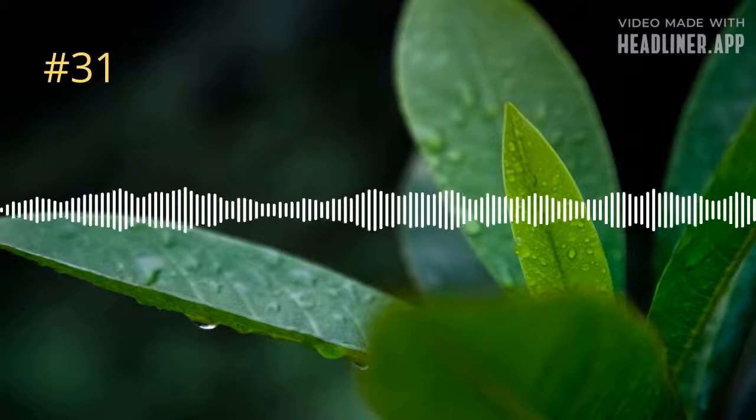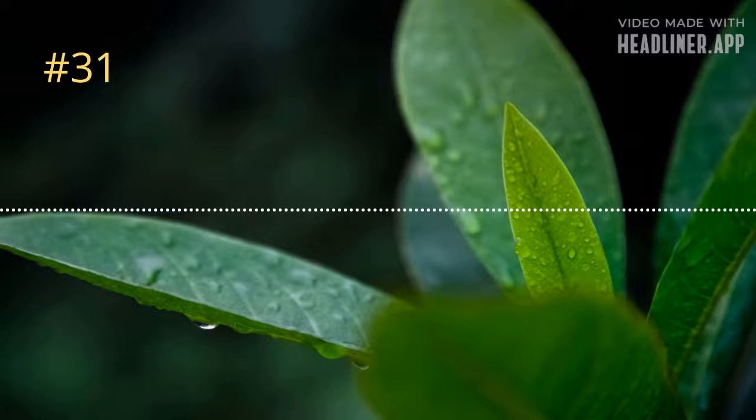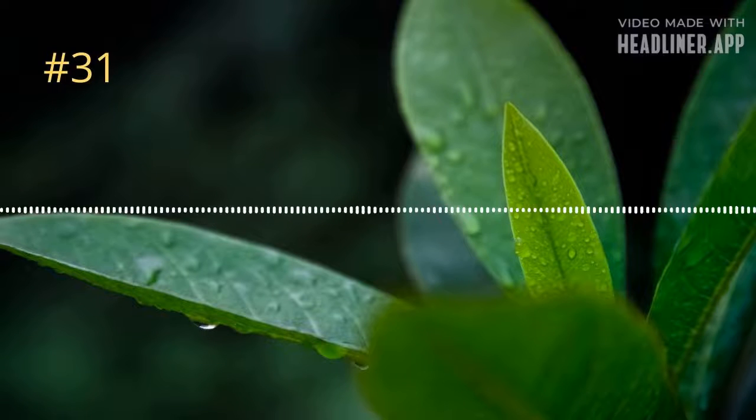The flagella of these choanocytes beat in order to create a water current through the sponge, which enables new water and new microorganisms to keep flowing through and arriving.